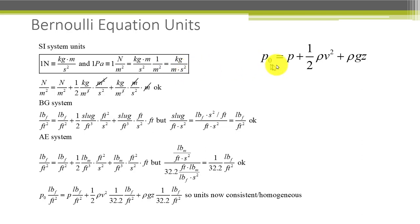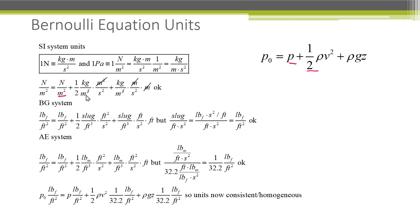So point by point we will check these units. The first term is pressure — that is newtons per meter squared. The second term, one-half rho v squared: one-half times kilograms per cubic meter times v squared, which has units of meters squared per second squared. After cancellation this yields kilograms per meter per second squared, which is a pascal. So that's correct.